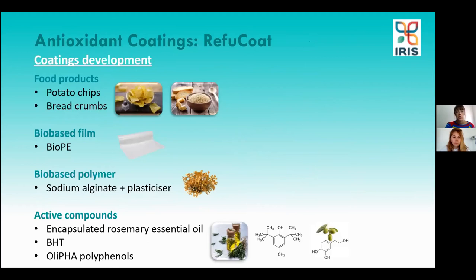In the Reficoat project, the two selected food products for the antioxidant coatings are potato chips and breadcrumbs, both affected by oxidation during storage. We are using bio-polyethylene as a bio-based film to apply the coating. For the coating itself, we chose sodium alginate as a bio-based polymer combined with different active compounds: encapsulated rosemary oil, BHT, and the Olifa polyphenols.